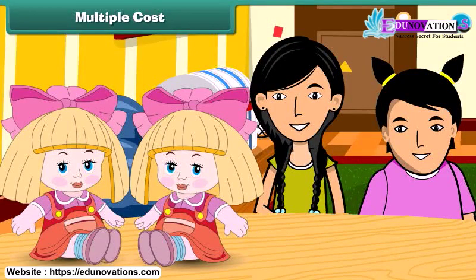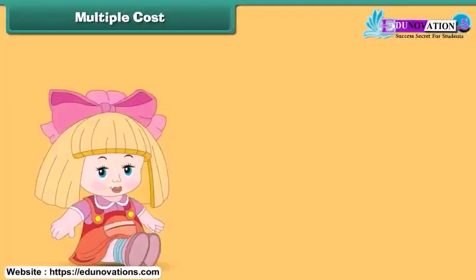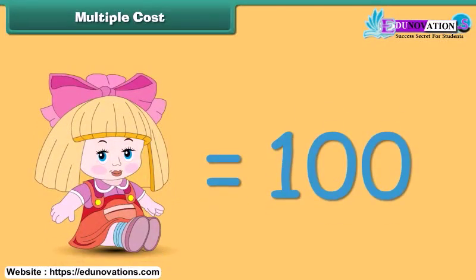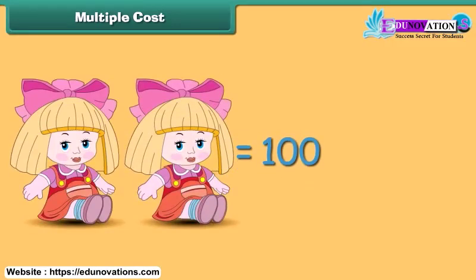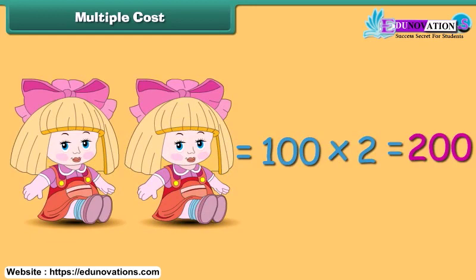Let us hear what these girls are talking. My mother bought these two dolls — one for me and one for my younger sister. The unit cost of the doll is 100 rupees. Unit cost is the cost of a single unit, so the cost of a single doll is rupees 100. The multiple cost of two dolls is equal to rupees 100 multiplied by 2, which is rupees 200. A multiple cost is the cost of more than one item and is calculated as unit cost multiplied by number of items.